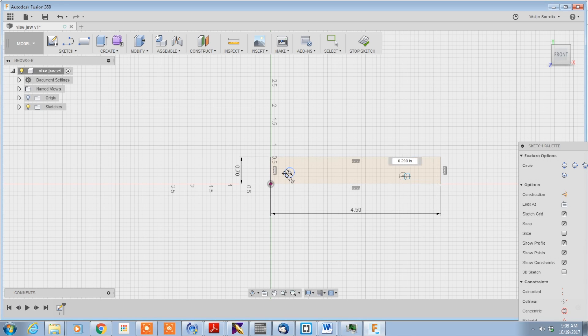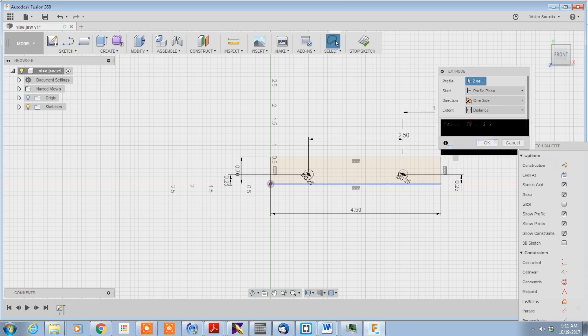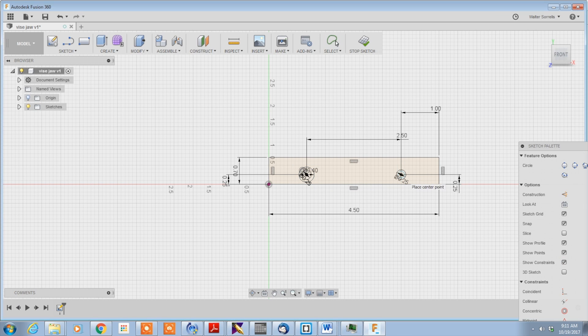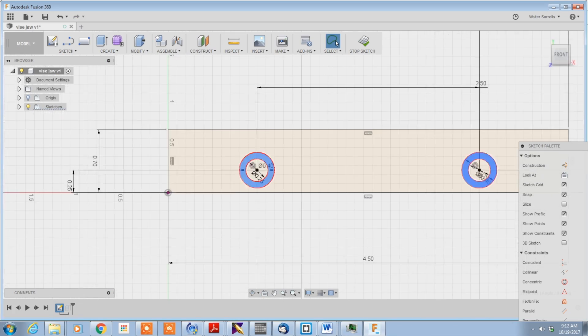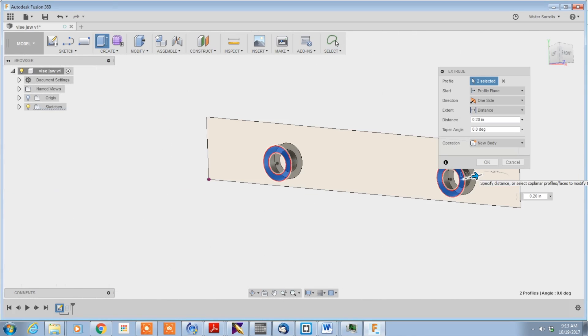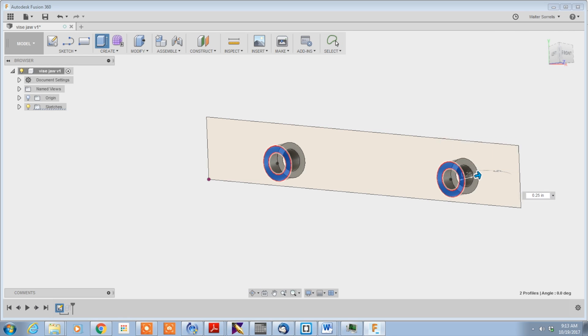Once I've dimensioned the holes, I'll give them some constraints to locate them on the sketch. Next, I'll add additional circles for the counterbore for the heads of the mounting bolts. Then I'll extrude the part, extrude the counterbores, add some fillets and chamfers to break the corners, and that's really about all there is to it.